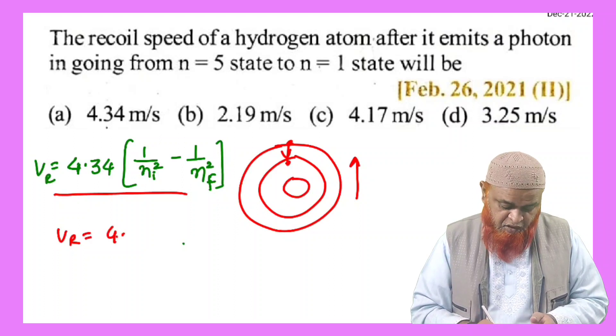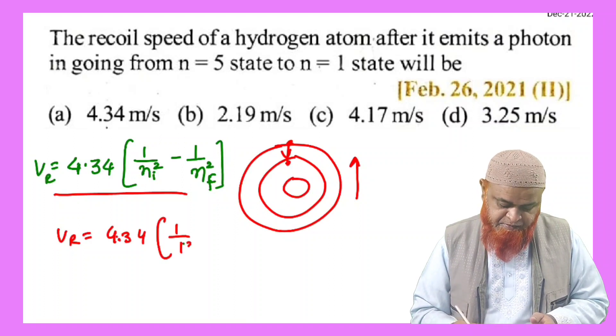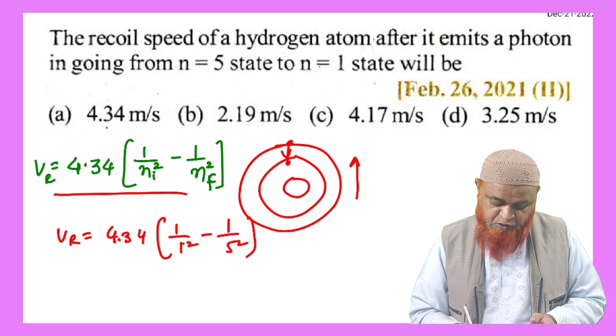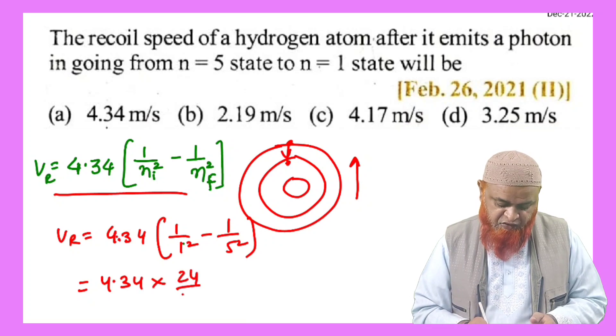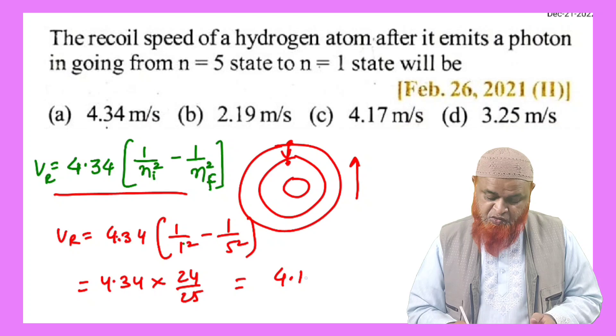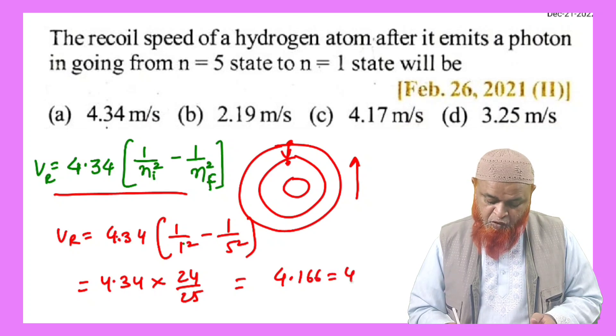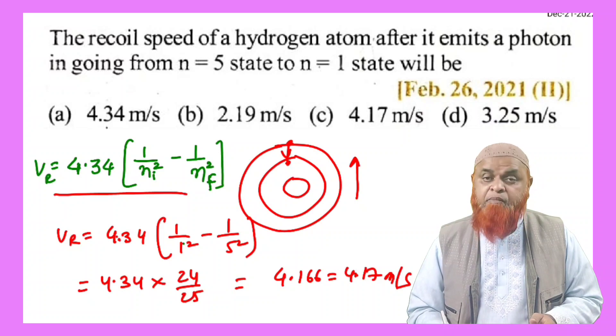So finally we're getting 4.34 into 24 by 25, which is going to be approximately 4.166, which is nothing but 4.17 meters per second. You are getting the answer.